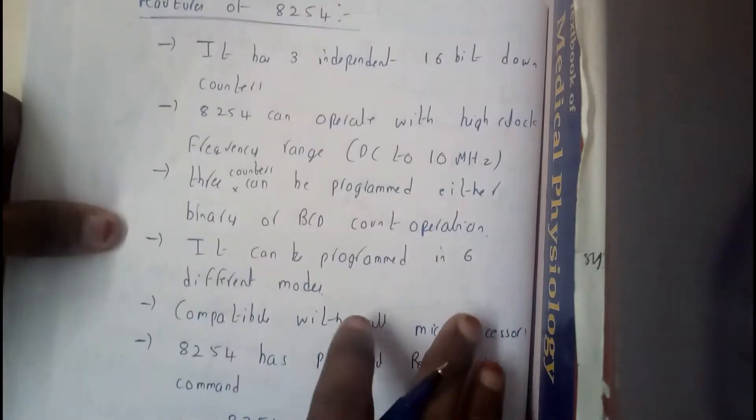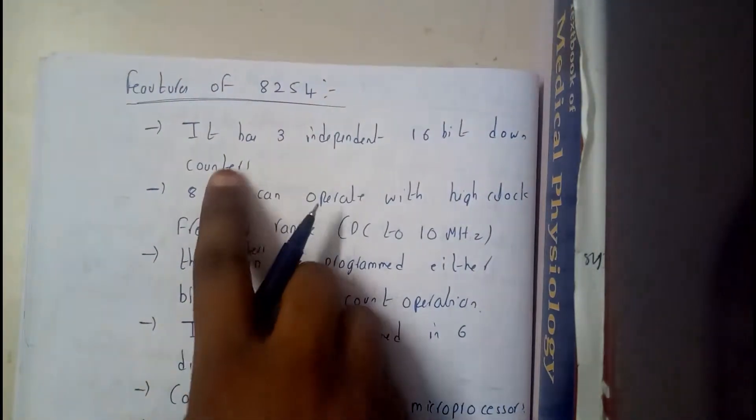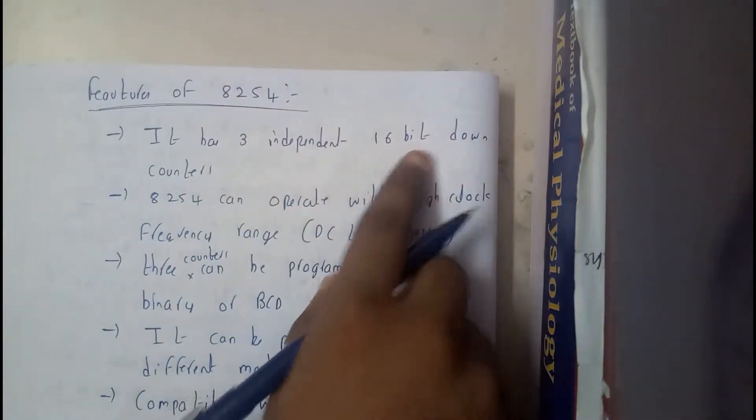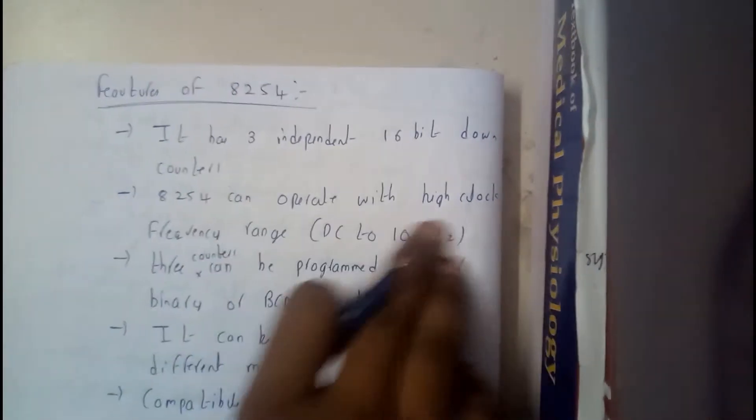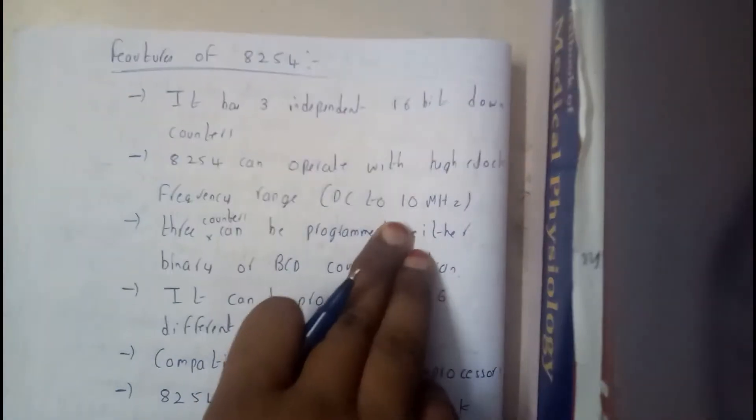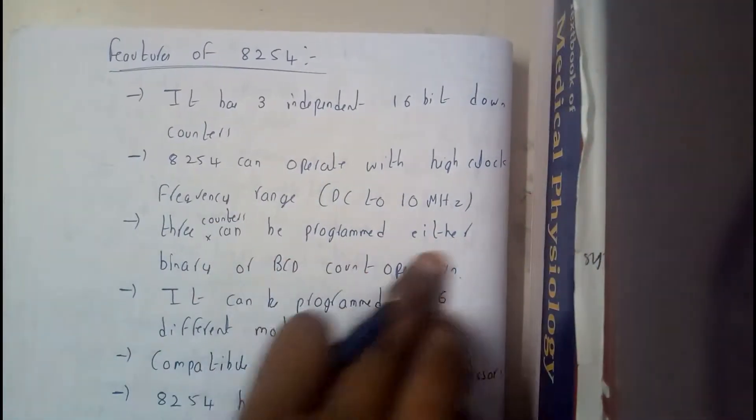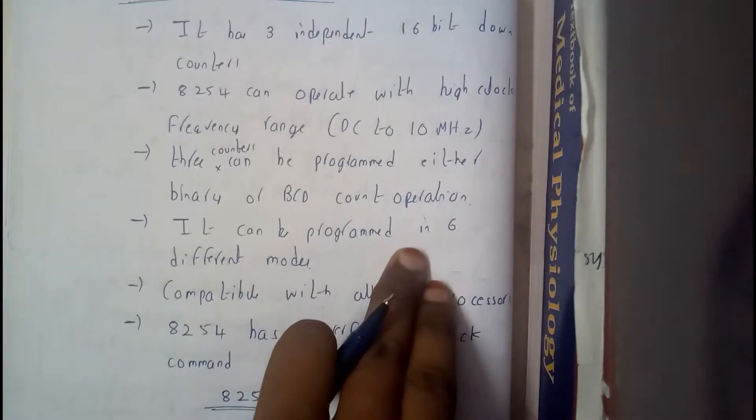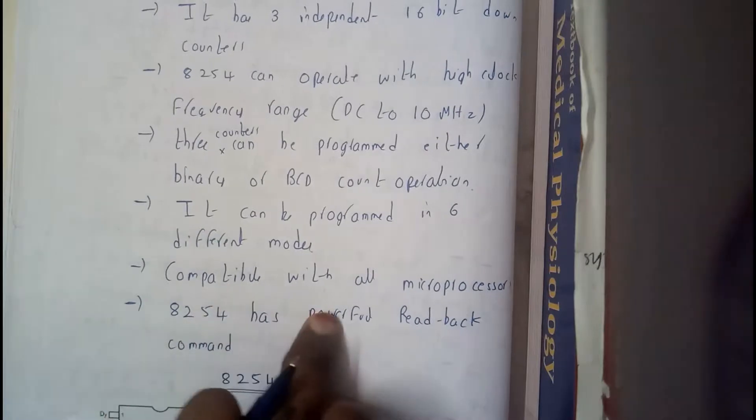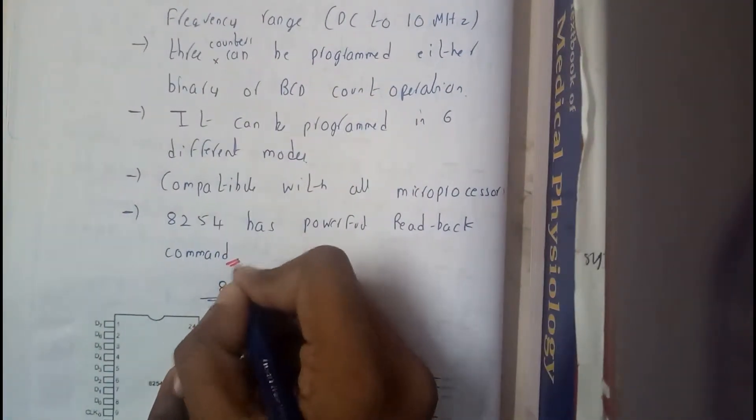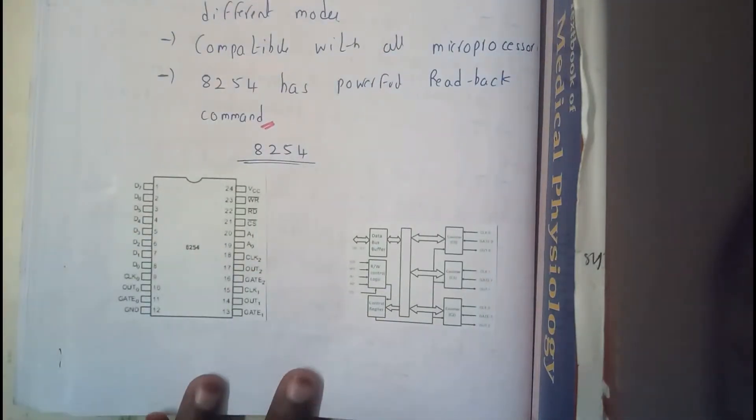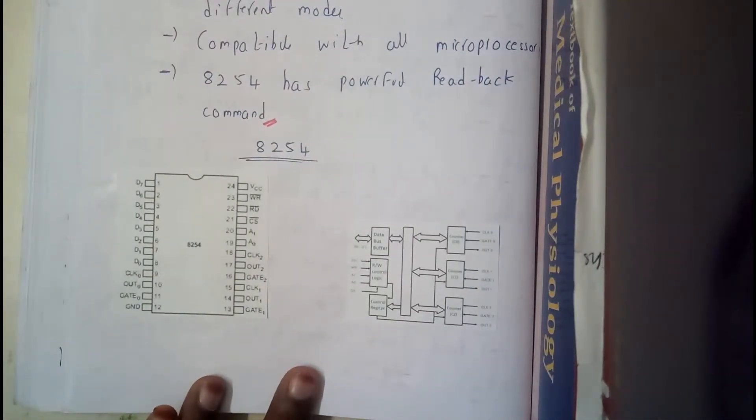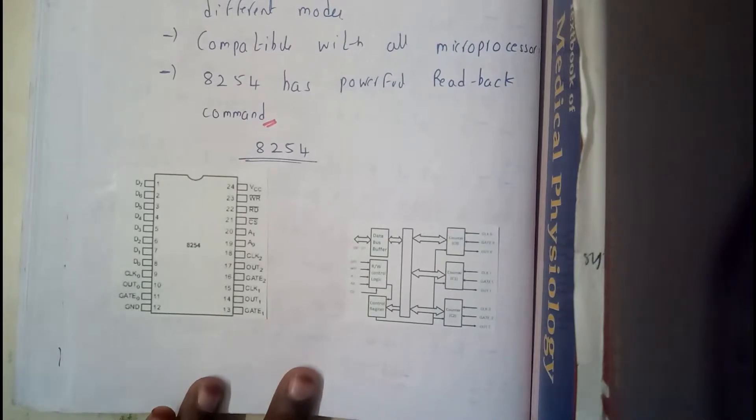And now let us go through what are the features of 8254. So it has 3 independent 16 bit down counters, it can operate in a frequency of DC to 10 MHz. 3 counters can be programmed either with BCD or binary. So it can be programmed again in 6 different modes, compatible with all the microprocessors. It has a powerful read back command. So the pin diagram is absolutely similar to that, almost.